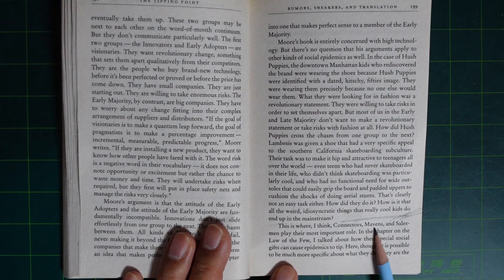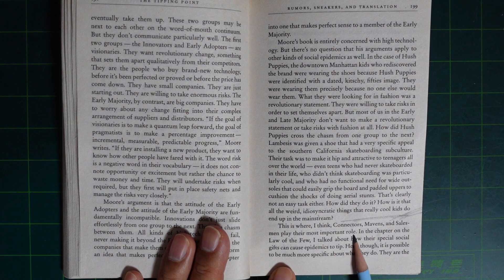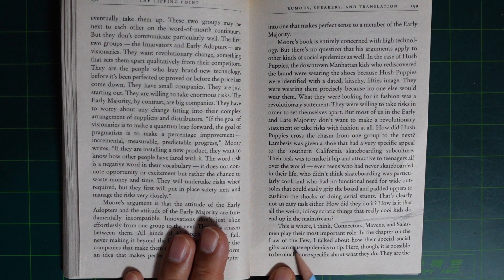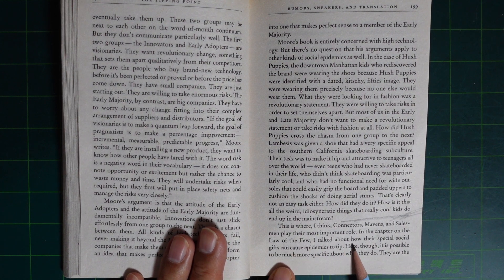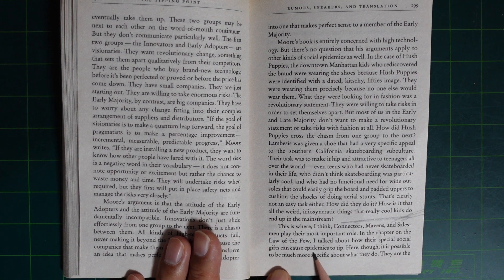This is where I think Connectors, Mavens, and Salesmen play their most important role in the chapter on the role of the few. I talked about how their special social gift can cause epidemics to tip.